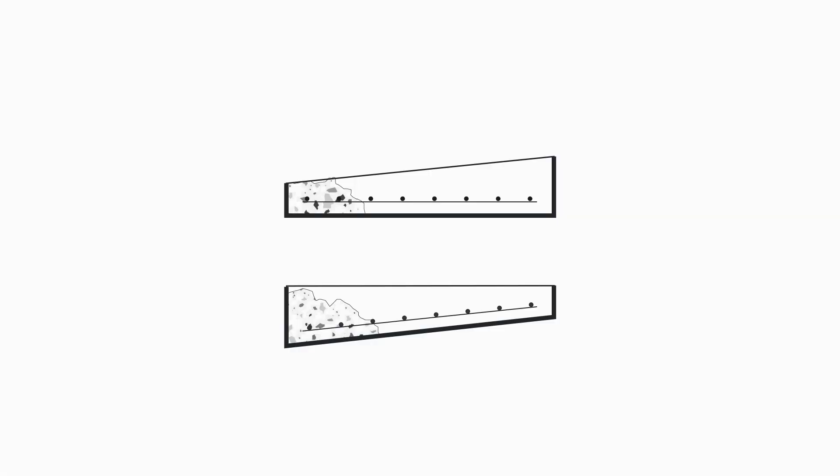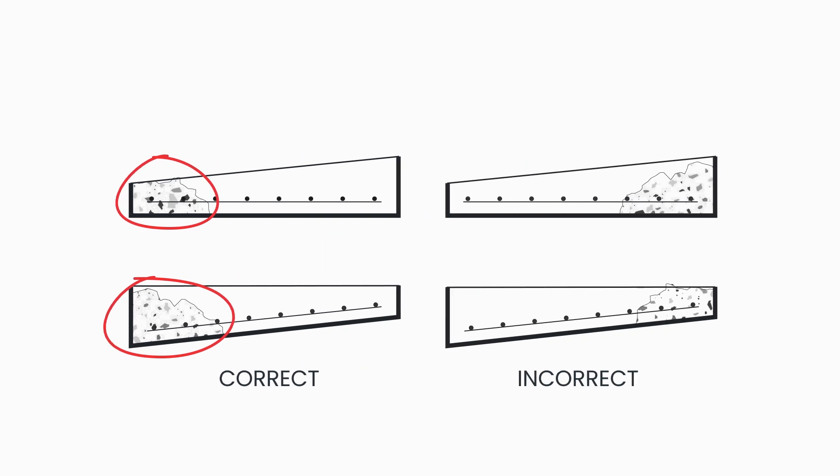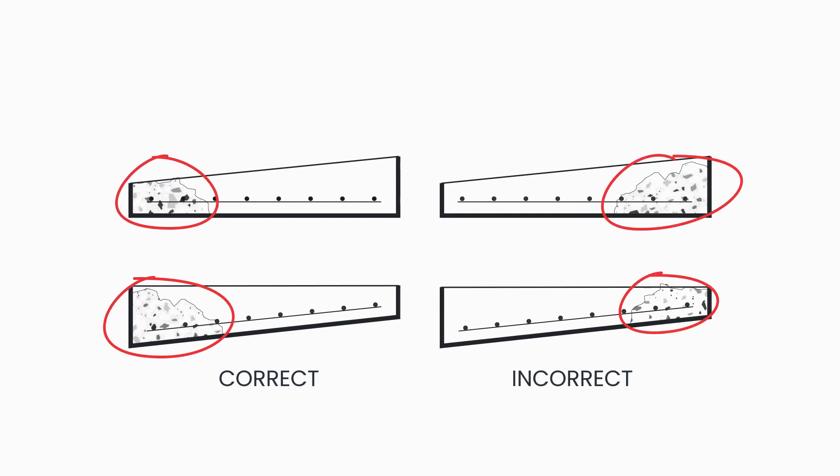If either the final surface or the soffit is sloping, commence placing at the lowest point. Placing from the highest point makes it more difficult to achieve correct levels and can lead to segregation as the concrete tends to settle down the slope.